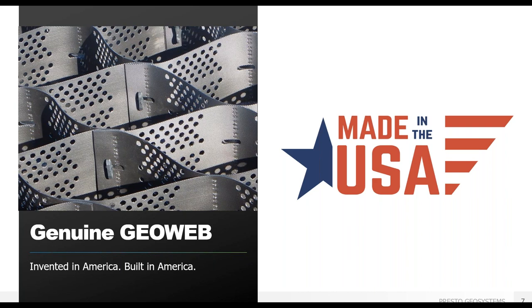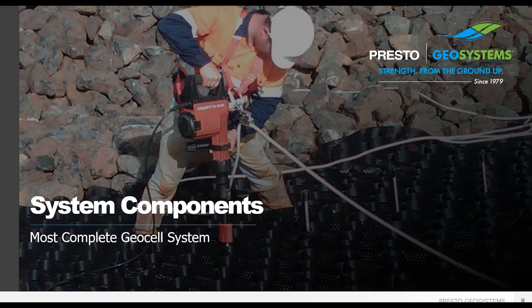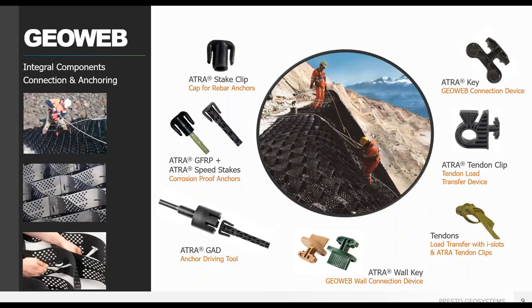Now let's recap those system components. The system components are all the supporting pieces that help the GeoWeb protect the surface and sub-base layers, and also ensure relatively uniform performance of the interconnected system, thereby protecting against the damaging effects of non-uniform deformation and differential settlement in response to applied loads. Presto's GeoWeb system components increase strength and speed of installation, each offering some additional best practice options that we'll mention in context with installation examples.